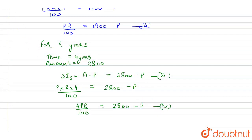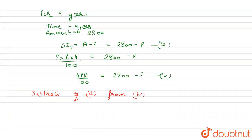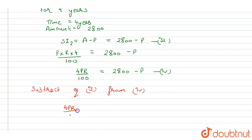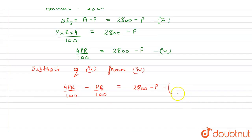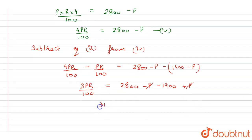Now we'll subtract equation second from equation fourth. From subtracting equation second from fourth, we get: 4PR/100 − PR/100 = (2800 − P) − (1900 − P). This simplifies to 3PR/100 = 2800 − P − 1900 + P. The P terms cancel, giving 3PR/100 = 900.